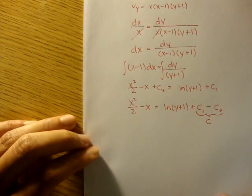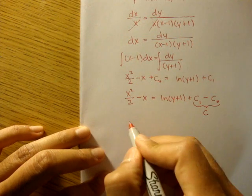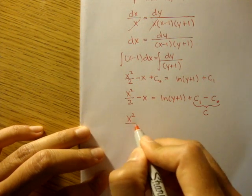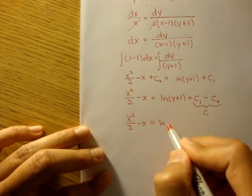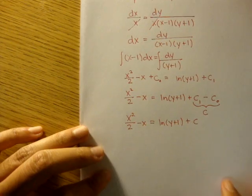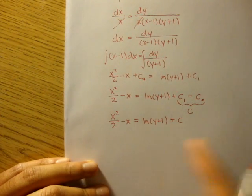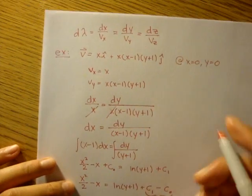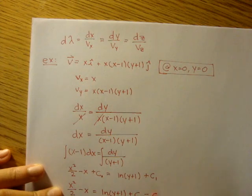Now let me just rewrite that really quick. x squared over 2 minus x is equal to ln of y plus 1 plus just a constant. Now we want to figure out what this constant is. And they want us to figure out the streamline equation at x equals 0, y equals 0.